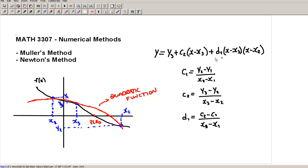That's the equation for the quadratic function here. And these coefficients, c2 and d1, are found by these formulas. c2 is based on the y values and the x values that are given. d1 is based on c2 and c1, which is given by this formula. If you plug the numbers in, you should be able to get the quadratic function.